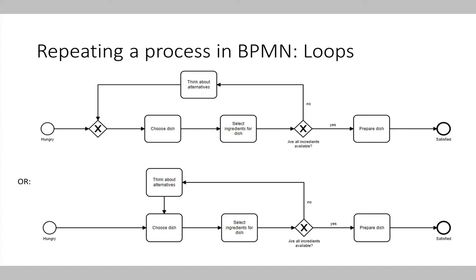Once we've seen the different gateway types, we can look at loops. It's not only possible to have a process that goes from start to end — we can also have loops inside the process. The process starts with the hungry event, we choose a dish, select the ingredients, and check if all ingredients are available. If so, we prepare and eat the dish. If not, we think about alternatives and go back to choosing a dish. So we have a loop in the process — we can go back until we find a dish where all ingredients are available.